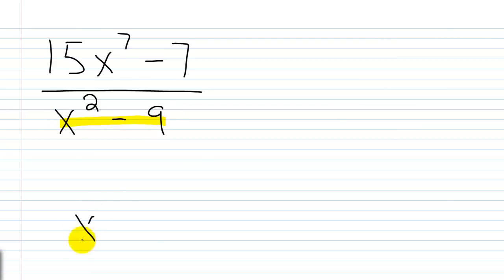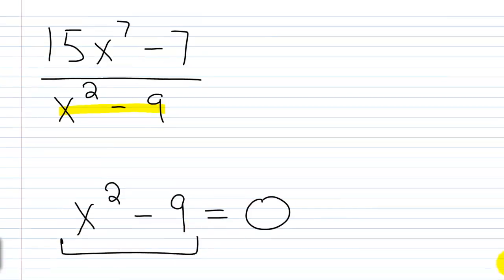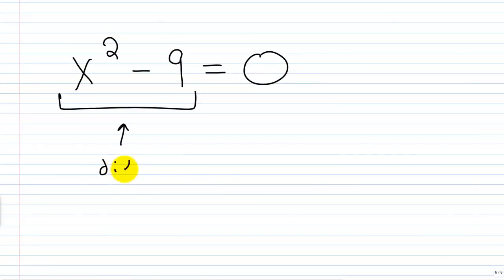So x squared minus 9 equals 0. A lot of you at this point should recognize that this right here is the difference of two squares.